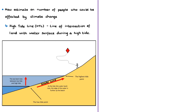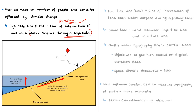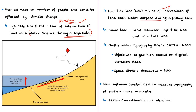The high tide line can be defined as the line of intersection of the land with the water surface at the maximum height reached by the rising tide. The low tide line is the line reached by the falling tide. The land between the high tide and the low tide is known as the shoreline. People living below the high tide line are prone to flooding and rising sea levels due to global warming.